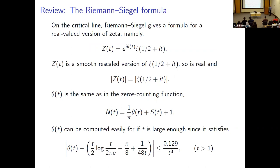Let me start with the Riemann–Siegel formula. If you're interested in computing zeta on the critical line, you have this version called Z(t), which is a real-valued version of zeta — a smooth function. It's the same as the earlier function we called ζ(1/2 + it), except it satisfies a relationship so that |Z(t)| matches |ζ|.